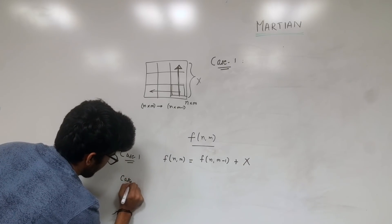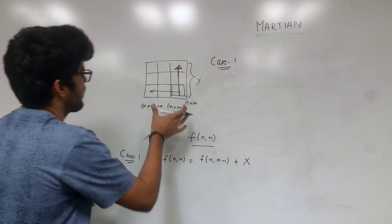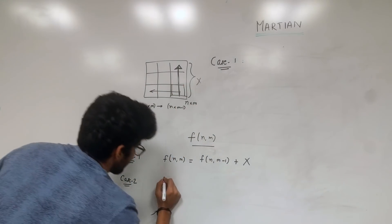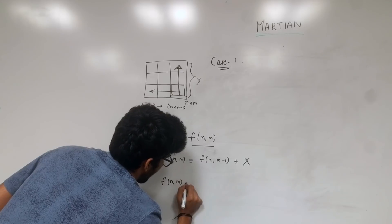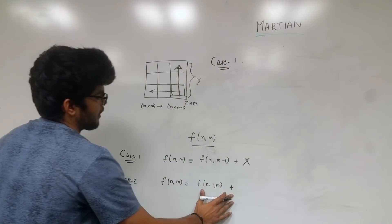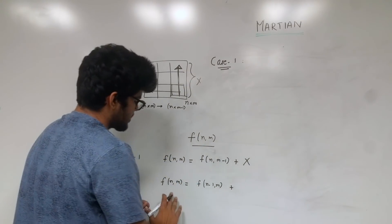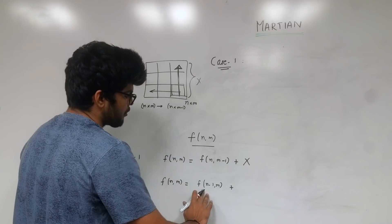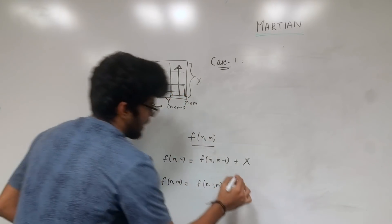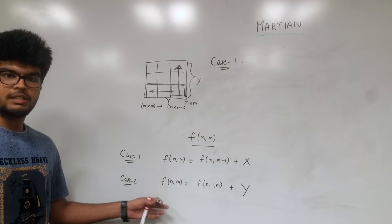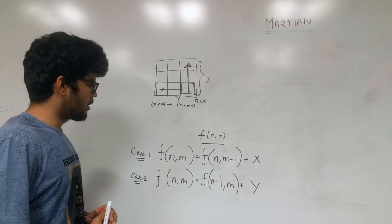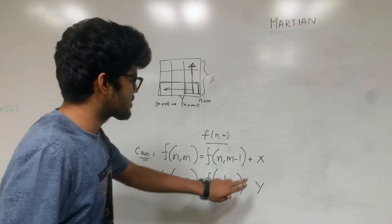Case 2 is when you gather minerals from the last row, which means our problem space is reduced from an n cross m grid to an n minus 1 cross m grid. So we can write the expression as: f(n, m) = f(n-1, m) plus the minerals gathered from the last row, which we call Y. This is basically our solution to the problem. All that is left to calculate is X and Y.